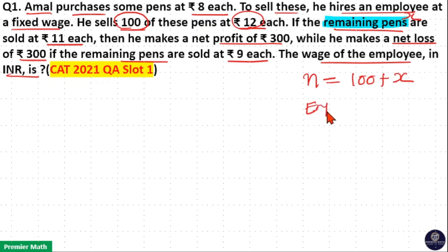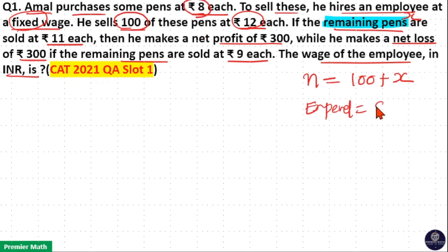Total expenditure for Amal is equal to cost price plus fixed wage. Cost price: Amal purchases pens at Rs. 8 each, so 8N is the cost price. Fixed wage I will take as W. So, 8N plus W is the total expenditure for Amal.